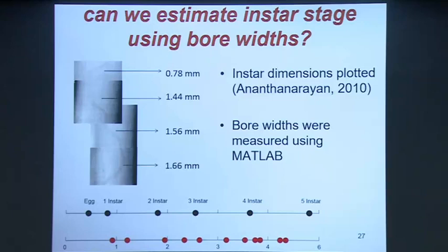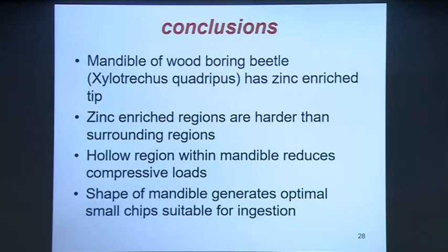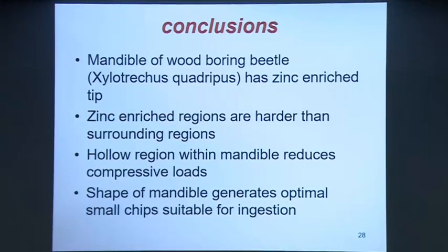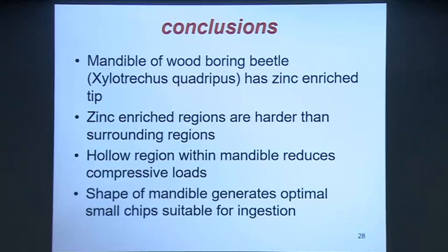To conclude: we have looked at two different species and showed that both seem to have zinc enrichment, and these regions are harder than surrounding regions, showing that zinc is being used very cleverly in nature. The shape of the mandible seems to be very critical and well-developed for doing its job very efficiently. This whole process makes the beetle very good at its work, and hence has made our job a lot more tricky in finding it early.